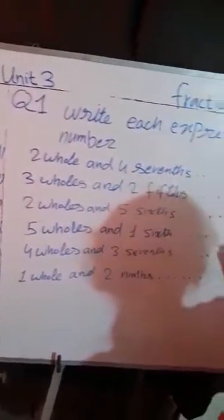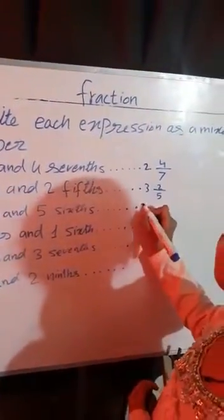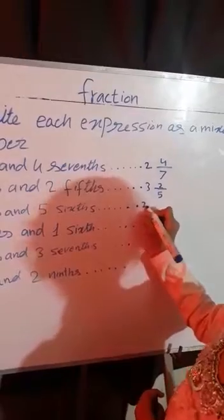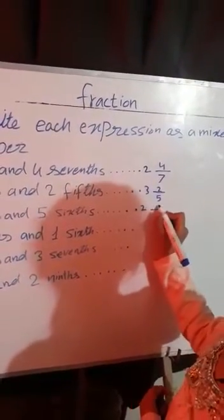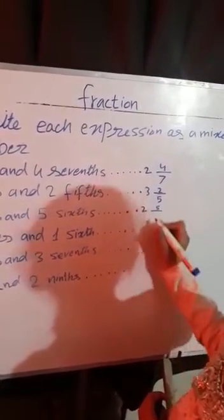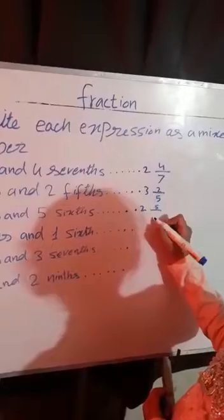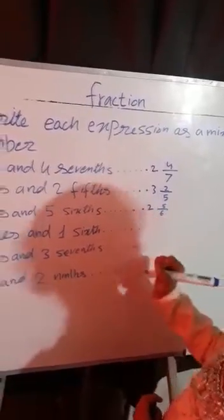Now we are doing Part C: 2 whole and 5/6. So we will write 2 on the side part, 5 on the numerator side, and 6 on the denominator side.